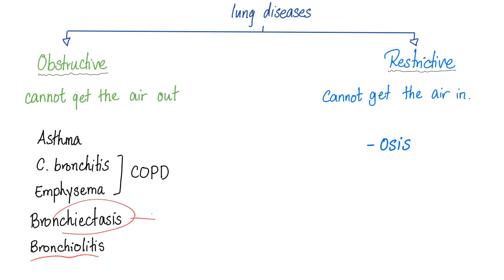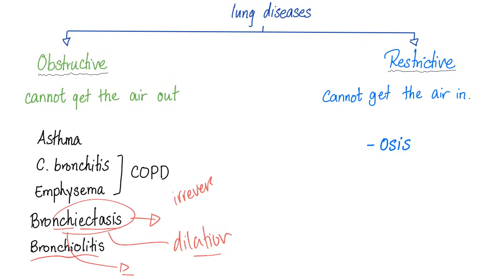Bronchiectasis is today's topic. 'Ectasia' means dilation, and 'bronchi' refers to the bronchial tree. So bronchiectasis is dilation of the airways or of the bronchial tree. It's an irreversible condition — once you've dilated those airways, they are not going back.